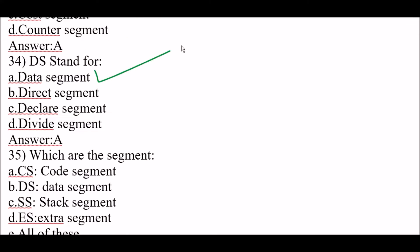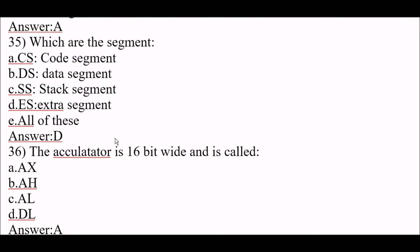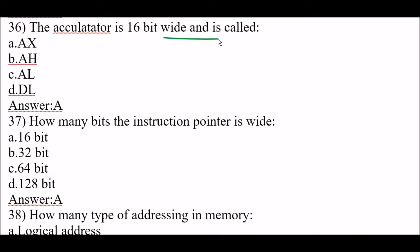Next question: which are the segment registers? CS is code segment, DS is data segment, SS is stack segment, ES is extra segment. The right answer is option D, ES — extra segment is a segment register.